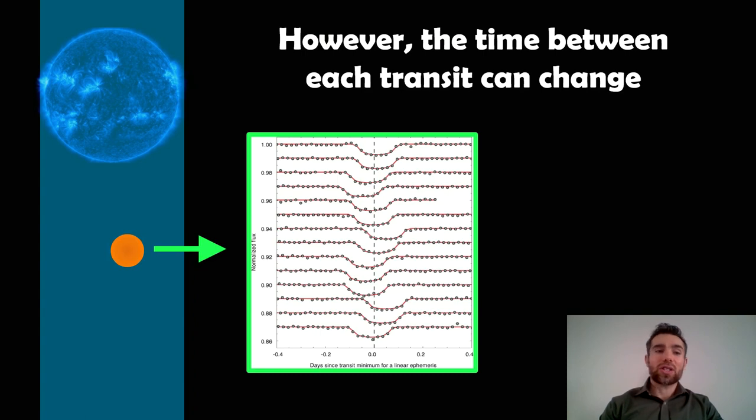However, there are changes that can happen that actually mean that transit happens earlier or later. There's a few reasons why that could occur. Some of those are apparent reasons like parallax or proper motion of the star. They actually change the geometry of the configuration of how we look at the star. It can make the transit appear slightly earlier or later, depending on how you look at it. But that's an apparent change.